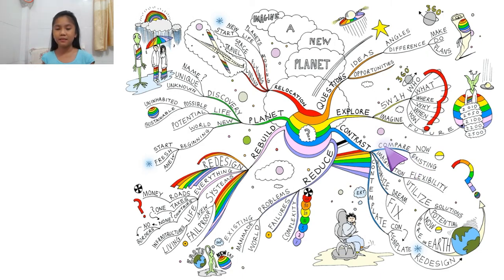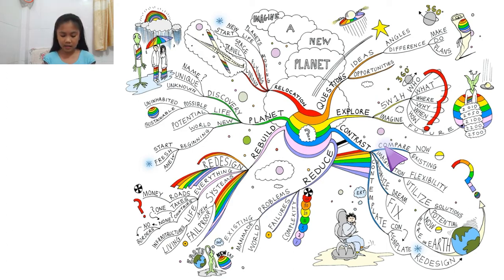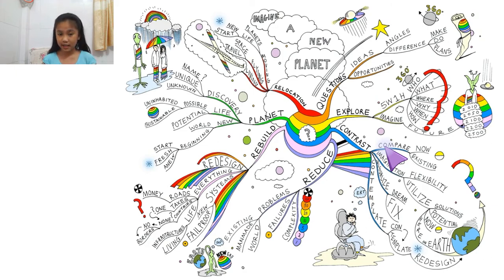Hi guys, my name is Suai, and today I'm going to be talking about 'Imagine a New Planet.' Today a lot of people are saying that Earth is having a really big problem about its population. So lots of people are trying to find different ways to help rescue Earth. So what are some of the ways that we can use to rescue Earth?